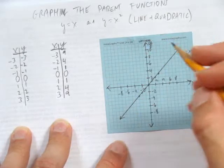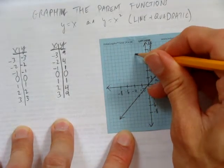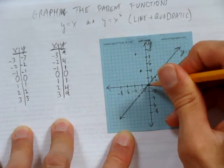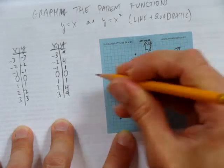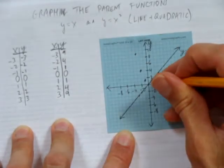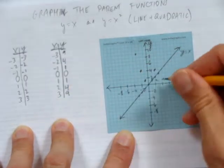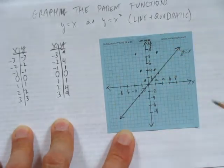And now when we put these points on the graph, negative 3, positive 9. negative 2, positive 4, negative 1, positive 1, 0, 0, 1, 1, 2, 4, and x-axis over 3, and up to 9 on y, we get a totally different shape.